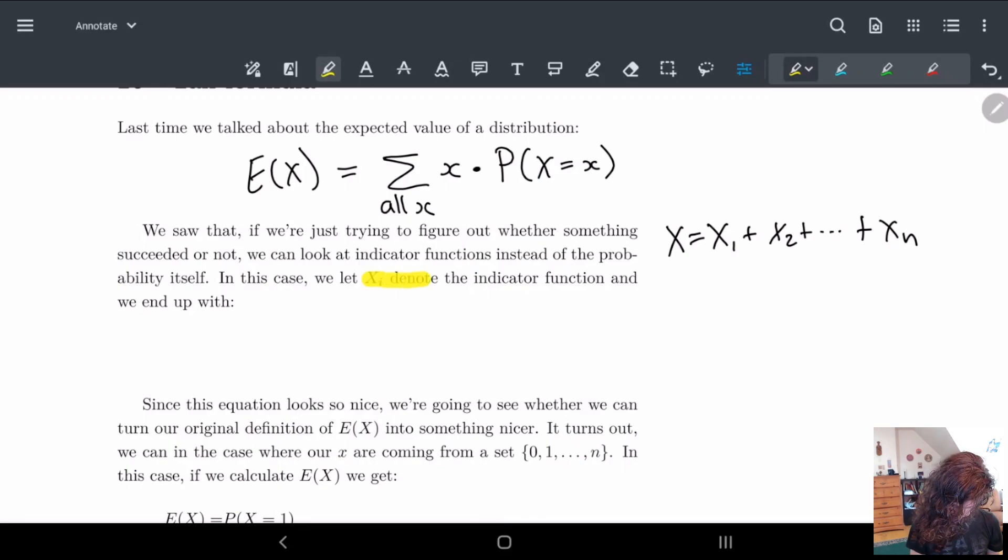If we let X_i denote the indicator function, this is where something either happens or it doesn't happen with some probability. We don't have multiple options, just one option: either yes or no.